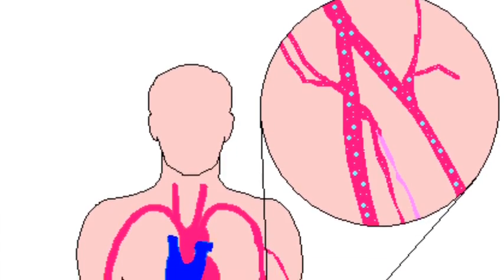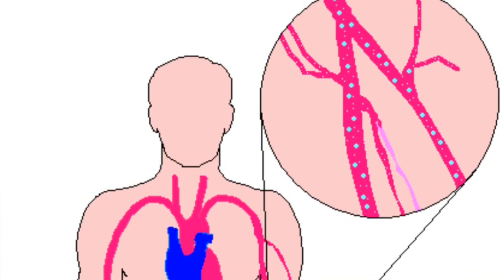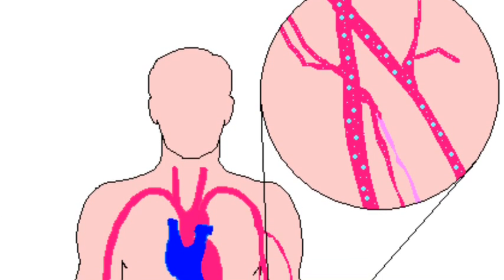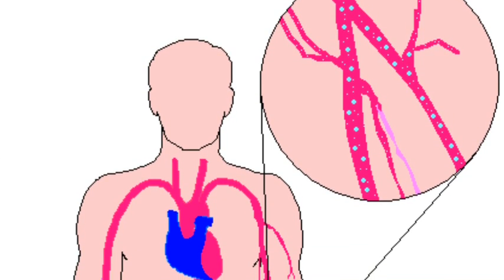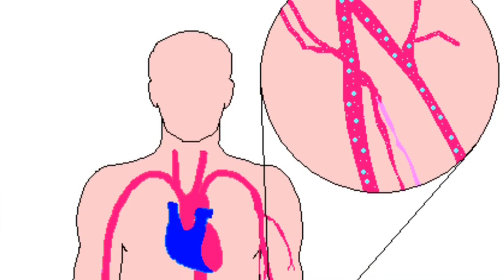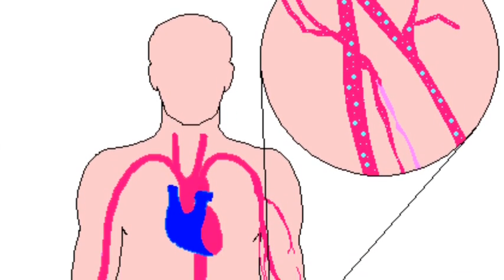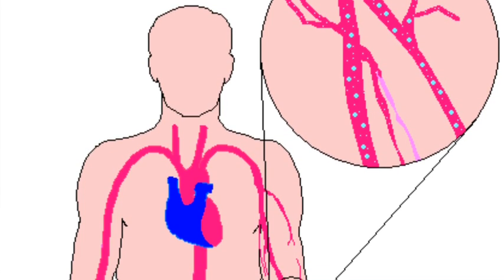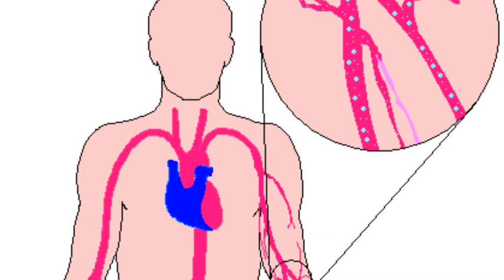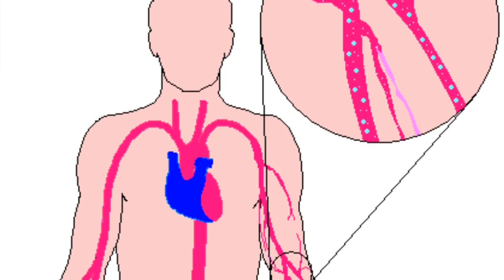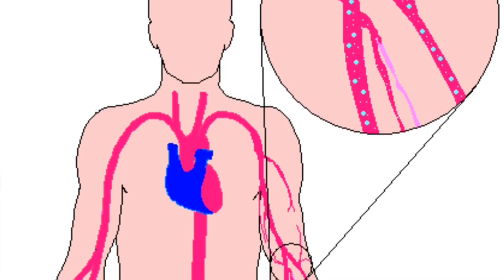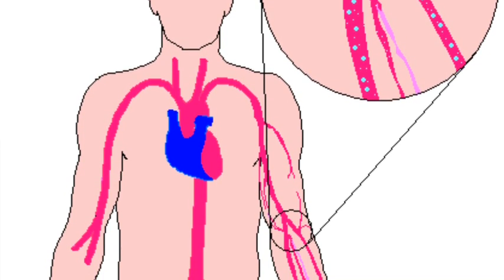DCS is thought to result from bubbles growing in tissue and causing local damage. DCS most commonly refers to a specific type of scuba diving hazard, but may be experienced in other depressurization events, such as flying in an unpressurized aircraft and extravehicular activity from spacecraft.